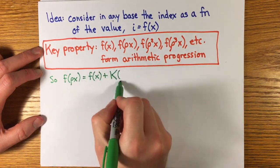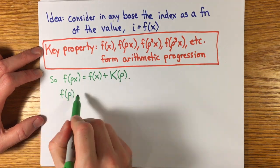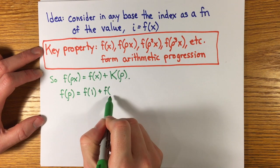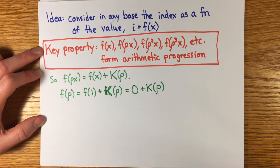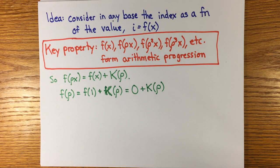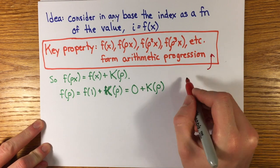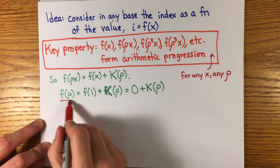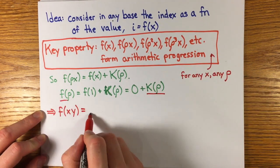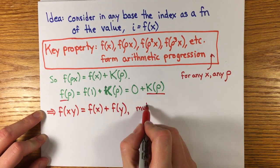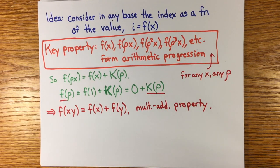Or f of rho x equals f of x plus k, a constant depending only on rho for any x. But then f of rho equals f of 1 plus k, but f of 1 equals 0, since that's where we start the table. So k of rho equals f of rho. And therefore, for any x and y, f of x, y equals f of x plus f of y. This again is the multiplicative additive property I mentioned in episode 5 in the first instance in which it appeared historically.